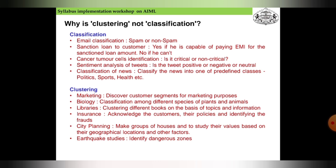Examples of classification: email classification as spam or not spam, sanctioning a loan to a customer if they are capable of paying, identifying cancer tumor cells as critical or non-critical, classification of news into predefined categories like politics, sports, or health.